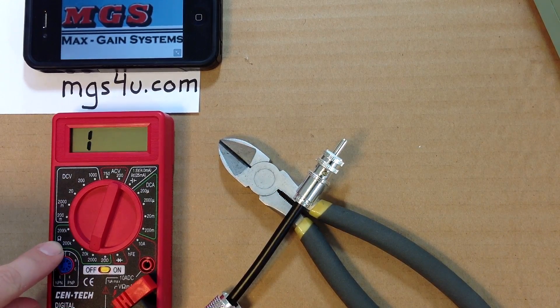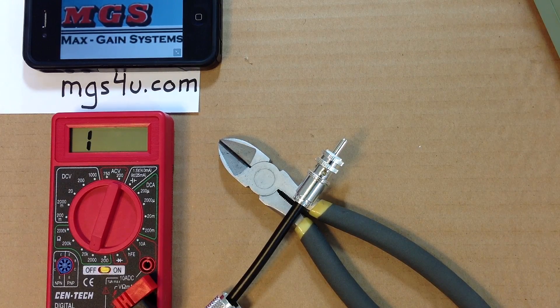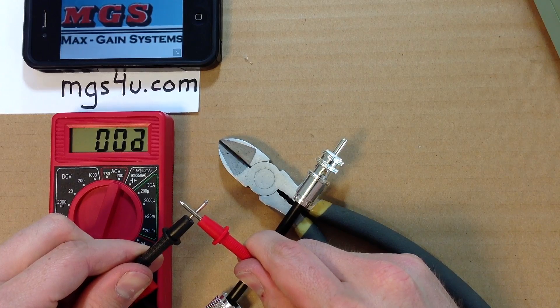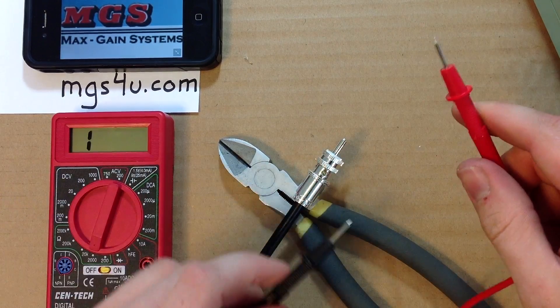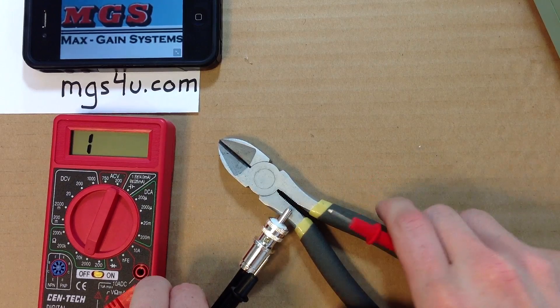Now we want to test our work. Make sure we do not have an internal short. Grab an ohmmeter and set it to the lowest ohm scale that it has. Touch the two leads together and it will show little to no resistance. This is what you do not want to see in your installation.